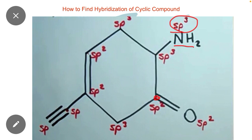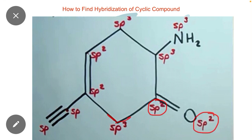Here you can see that a double bond is present between carbon and oxygen. If one double bond is present, its hybridization will be sp2, and the oxygen also has sp2 hybridization. Similarly, there is no double bond or triple bond at this carbon, so its hybridization will be sp3.